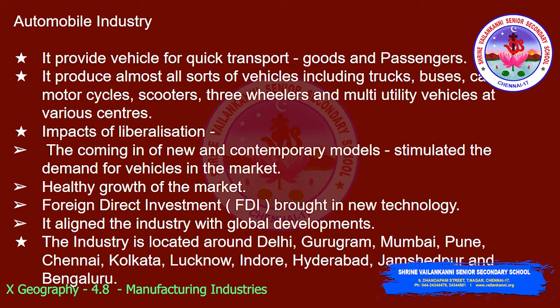Next we will see about the automobile industry. It is divided into two broad segments: passengers and goods. It produces almost all sorts of vehicles including trucks, buses, cars, motorcycles, scooters, three wheelers and multi-utility vehicles at various centers. The coming in of new and contemporary models stimulated the demand for vehicles in the market. This facilitated the healthy growth of the market, and moreover foreign direct investment brought in new technology and aligned the industry with global developments.